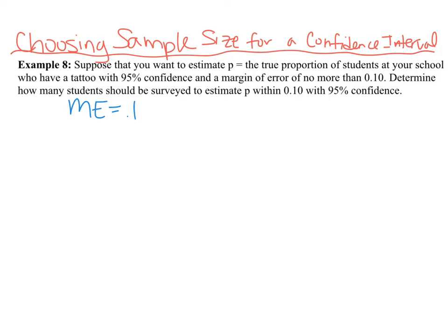So the first thing that you are going to do is you are going to have to recall the formula for margin of error. The formula for margin of error is z star, your critical value, times the square root of p hat times 1 minus p hat all over n.